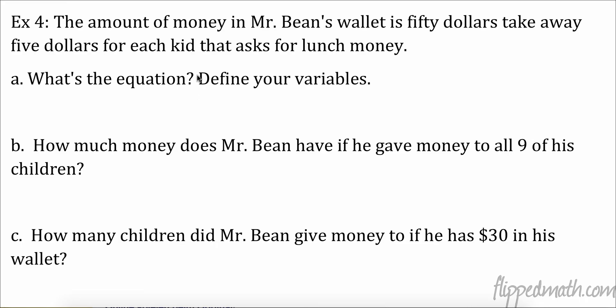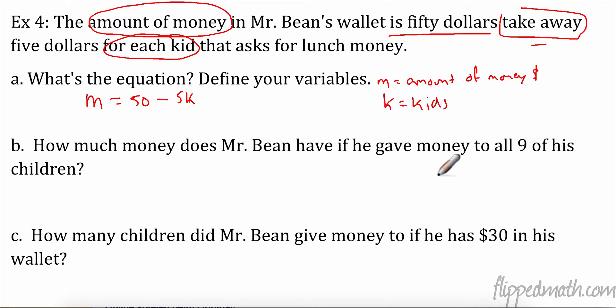Now I'm going to do some modeling with this math. We're going to make it useful in a real world context. So we have a word situation here. The amount of money in Mr. Bean's wallet is $50. Take away $5 for each kid that asks for lunch money. So let's take a look. Mr. Bean's wallet, the amount of money, this is something that is changing. I want to find two things that are changing. And the number of kids is changing. What else is important? Is $50. Take away. That would be subtraction, right? So I think we can come up with an equation here. So the amount of money, I'm going to call that M. And over here it says define your variable. So I'm going to say M is the amount of money. The amount of money is 50. Take away minus $5 for every kid. I'm going to say K is kids. I'm going to come over here and define it. K is kids.